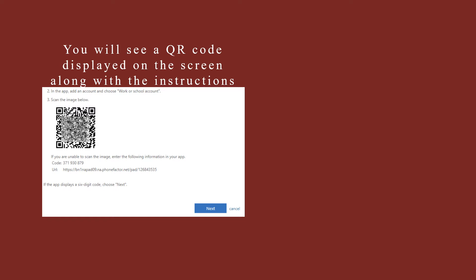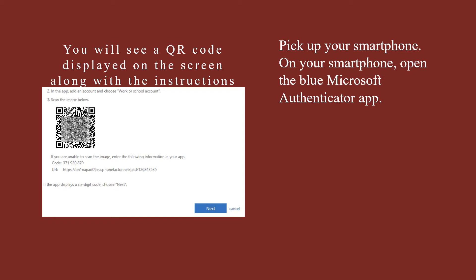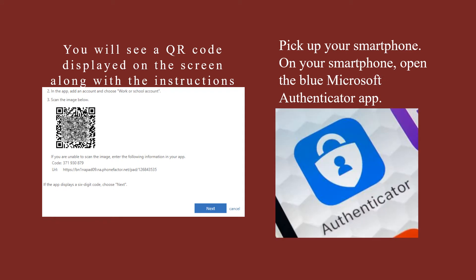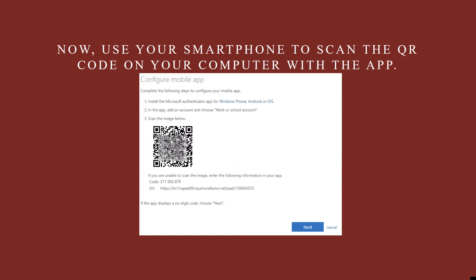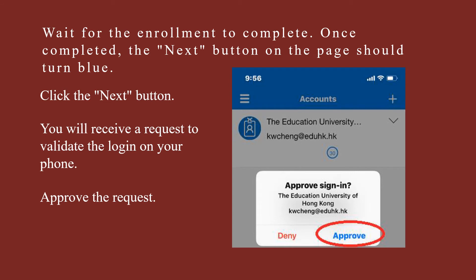A screen with a QR code will pop up — don't do anything here yet though. Let's go back to your smartphone. Now is the time to open that Microsoft Authenticator app you just downloaded. Click Add Account. You will be asked what type of account you are adding — choose Work or School Account; it should be the middle option. Next, you're going to use your smartphone to scan the QR code. Simply hold your phone up to the screen so the QR code is in view of the phone's camera. The app will now begin to do all the work. You'll know it's finished processing when the Next button on the page turns blue — when it does, simply click Next.